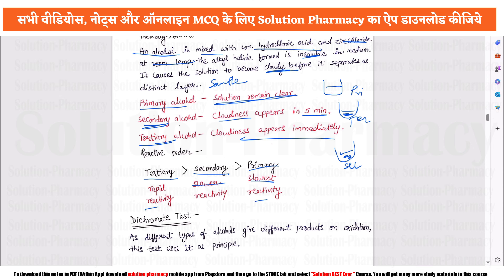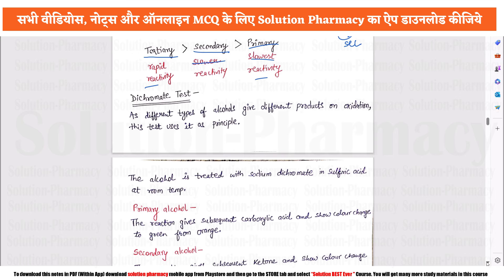The next test is the dichromate test. In this test, the alcohol sample — whether primary, secondary, or tertiary — provides different products upon oxidation. We react the sample with sodium dichromate in the presence of sulfuric acid. Different degrees of alcohol give different results, allowing us to distinguish between the three types.